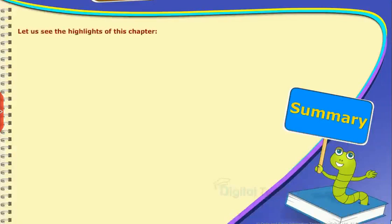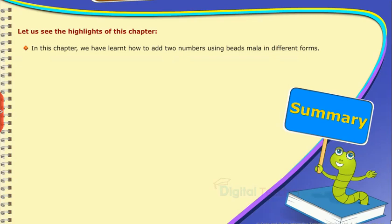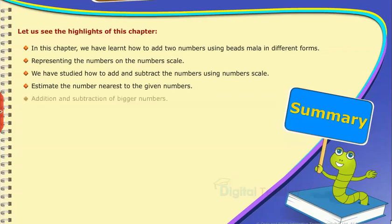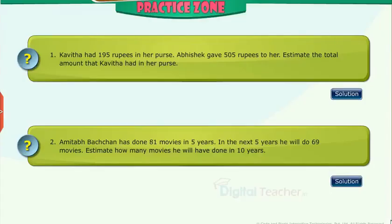Summary — let us see the highlights of this chapter. In this chapter, we have learned how to add two numbers using beads Mala in different forms; representing the numbers on the number scale; how to add and subtract numbers using the number scale; how to estimate the number nearest to the given numbers; and addition and subtraction of bigger numbers. Practice zone: try to solve the questions on your own, then click solution to verify your answers.